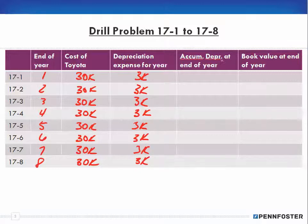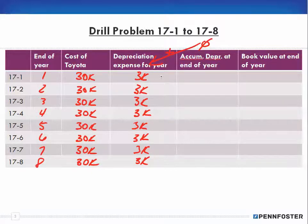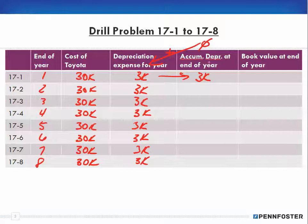Now for accumulated depreciation, we're always taking the balance at the end of the previous year and adding the depreciation expense for the new year. When we first get started, at the end of the previous year we have zero for accumulated depreciation, so when we add the depreciation expense for this year that gives us our accumulated depreciation at the end of the year — in this case $3,000. I'll continue down the accumulated depreciation column.